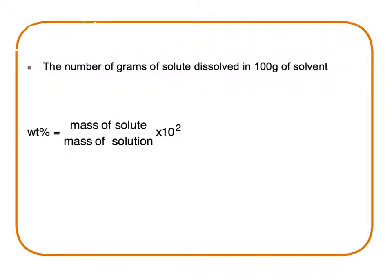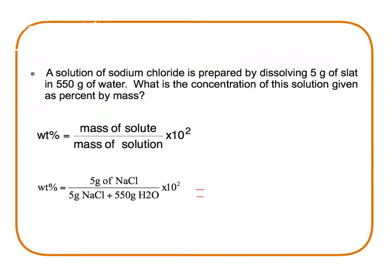Simply put, percent weight equals the mass of solute divided by the mass of solution times 100. So as we apply percent weight to the following example, let's see our approach to the solution. A solution of sodium chloride is prepared by dissolving 5 grams of salt in 550 grams of water.